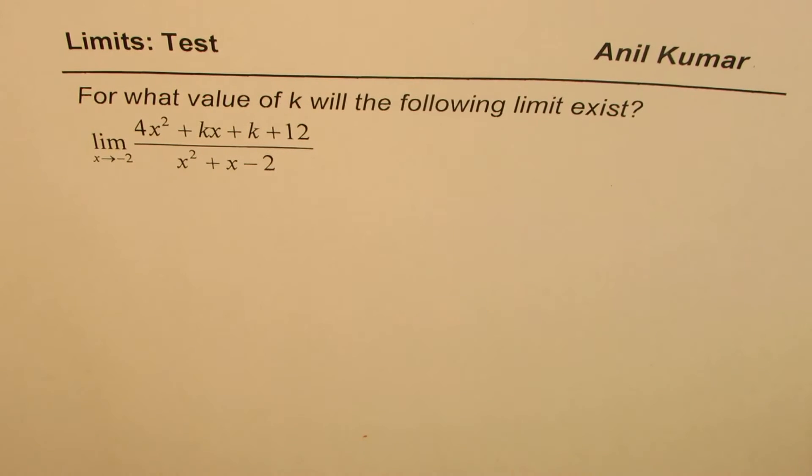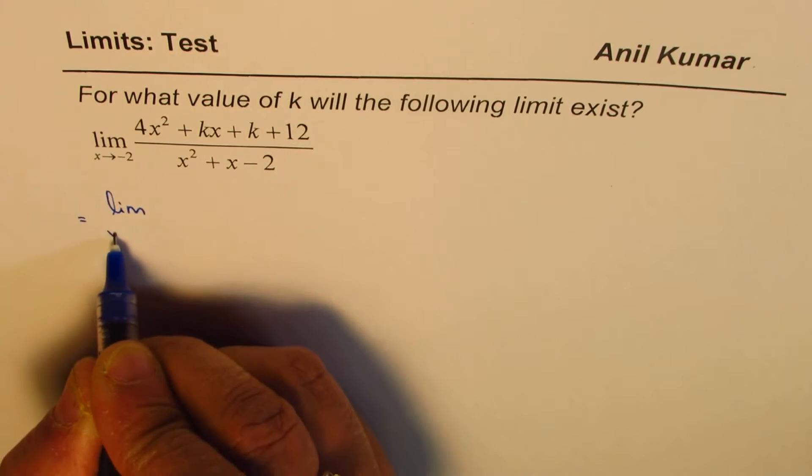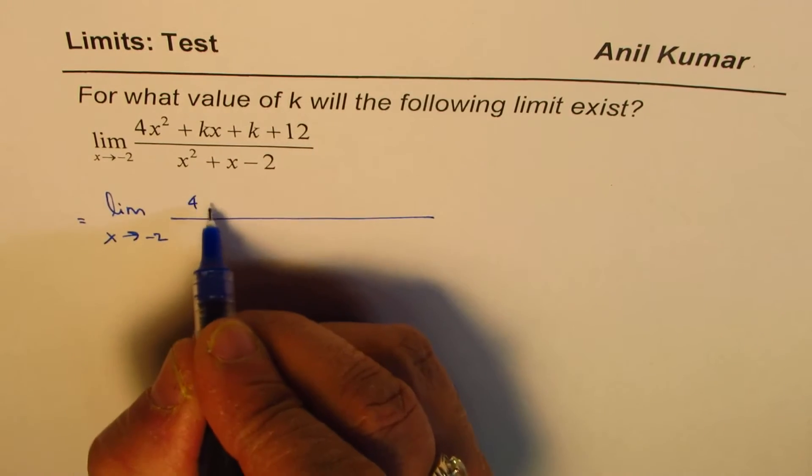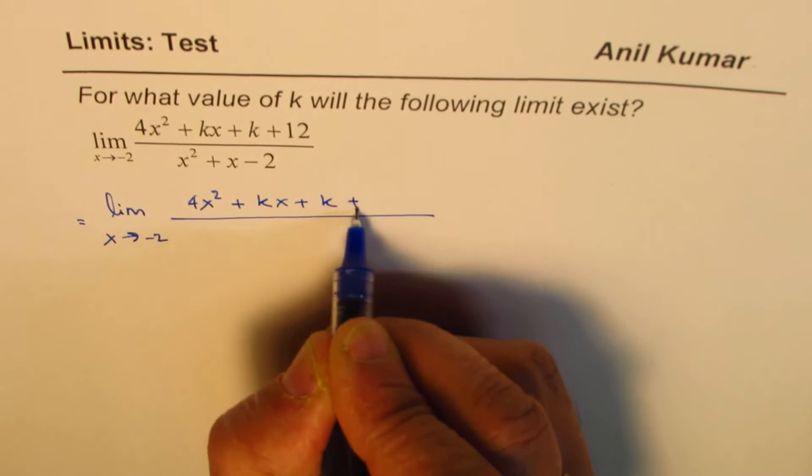Let us explore this function a bit more. So what we are given here is the limit x approaches minus 2. There's something in the numerator, let me rewrite this: 4x² plus kx plus k plus 12.